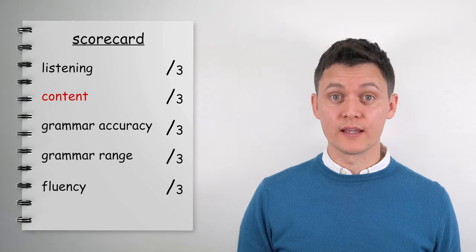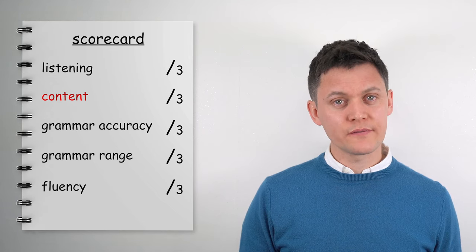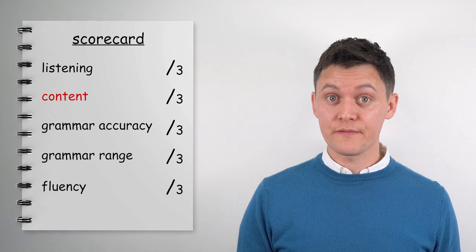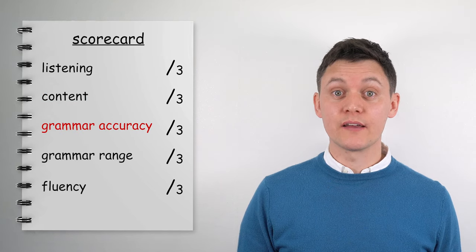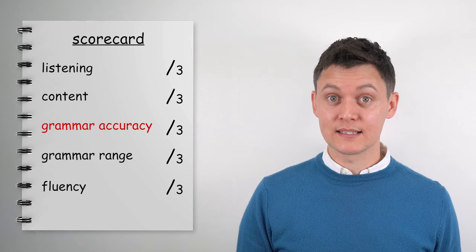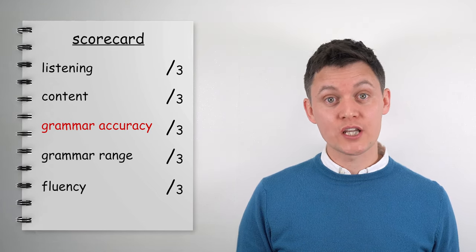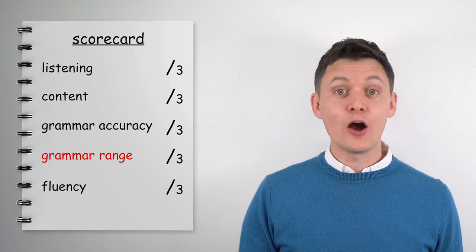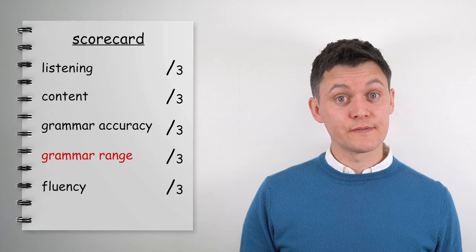Then we score content. How was your answer? Did you give enough detail? Did you use specific vocabulary for that question? Grammar accuracy looks at the accuracy of your grammar — did you make many mistakes and did you use the right grammar for the question? Then we look at grammar range. How many grammar structures did you use? Did you use a nice variety?